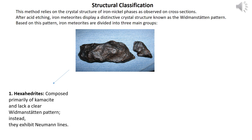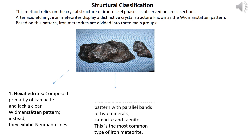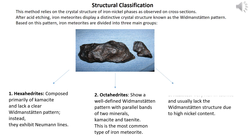Structural groups: (1) Hexahedrites — composed primarily of kamacite and lack a clear Widmanstätten pattern; instead they exhibit Neumann lines. (2) Octahedrites — show a well-defined Widmanstätten pattern with parallel bands of two minerals, kamacite and taenite; this is the most common type of iron meteorite. (3) Ataxites — very rich in taenite and usually lack the Widmanstätten structure due to high nickel content.